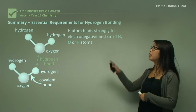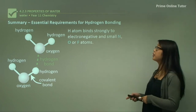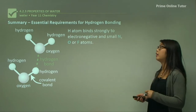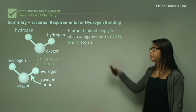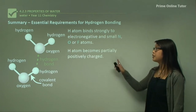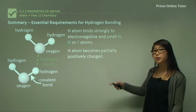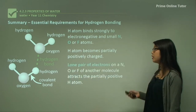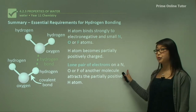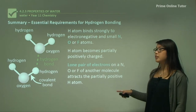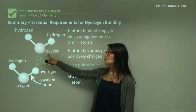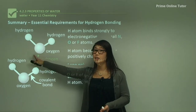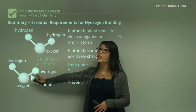In summary, the essential requirements for hydrogen bonding are: hydrogen atoms must be bound to strongly electronegative but small atoms — nitrogen, oxygen, or fluorine. The hydrogen atom becomes slightly positively charged due to the pull of electrons toward the electronegative atom. And the lone pairs on the nitrogen, oxygen, or fluorine of another molecule attract the partially positive hydrogen atom.